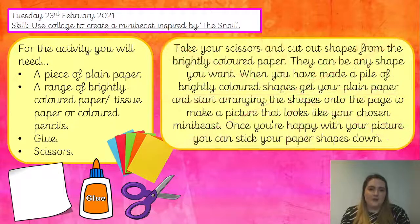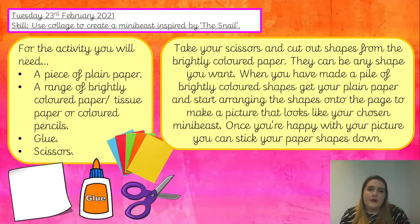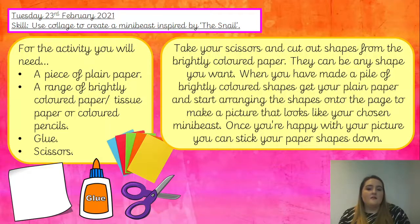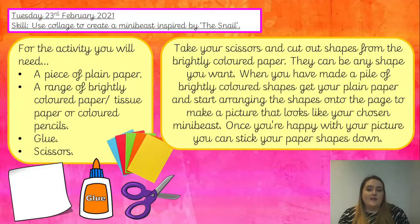If you choose the coloured paper technique — which we're doing in school — here's the method: take your scissors and cut out shapes from the brightly coloured paper. Think about the colours you'll use for your mini beast. If you're making a bumblebee, for example, you might use black, yellow, and maybe blue for the wings. The shapes can be any shape you want. When you have a pile of brightly coloured shapes, get your plain paper and start arranging the shapes on the page. You might even like to draw the outline first like Matisse did. Once you're happy with your picture, start sticking your coloured paper shapes down with glue.